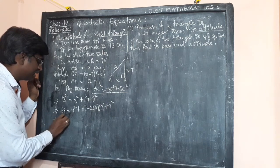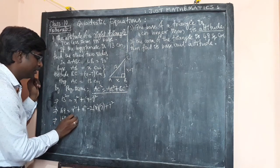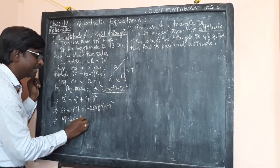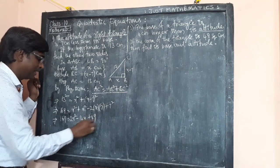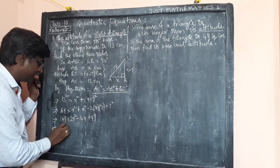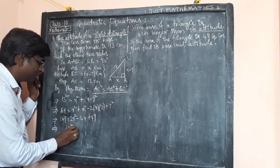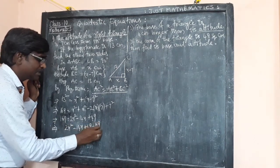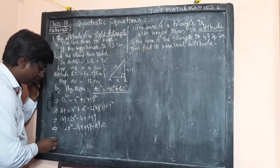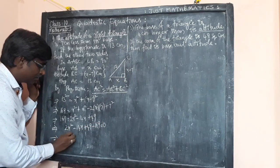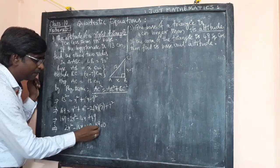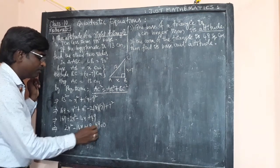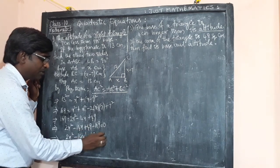Simplifying, 169 = 2x² minus 14x plus 49. Rearranging, 2x² minus 14x plus 49 minus 169 = 0, which gives us 2x² minus 14x minus 120 = 0.